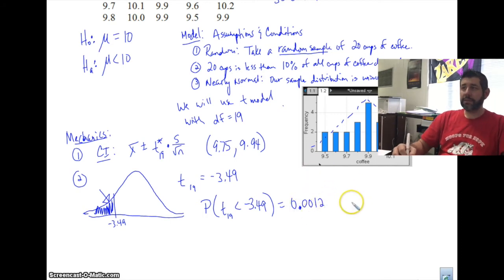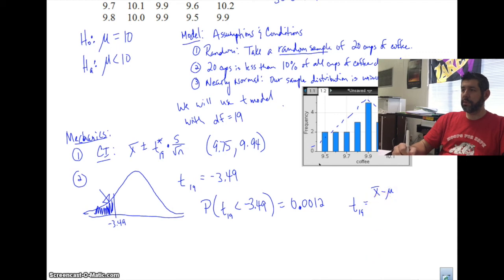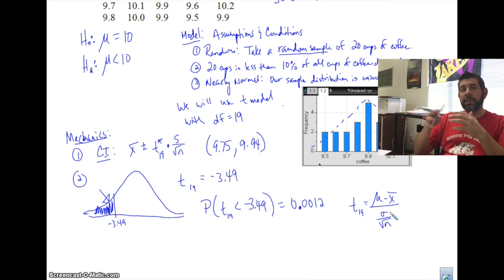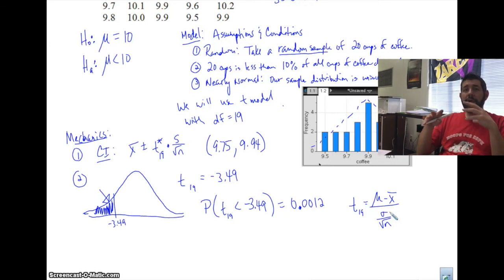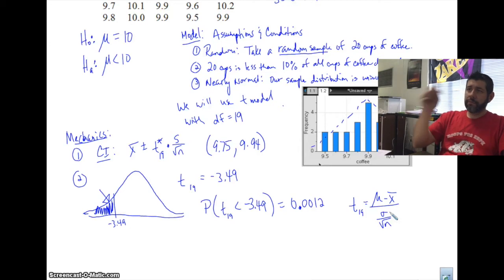We can also write down the formula for T, which is X-bar minus μ₀ over S divided by the square root of N. That looks just like the Z-score for a sampling distribution of means, and it is — except we use the T distribution when sample size isn't large enough to use the normal model. That's why we use a T distribution for hypothesis tests for means.